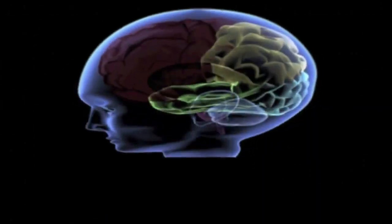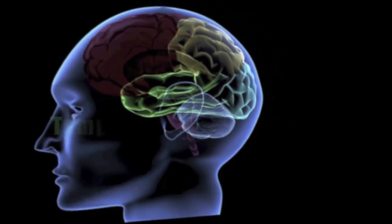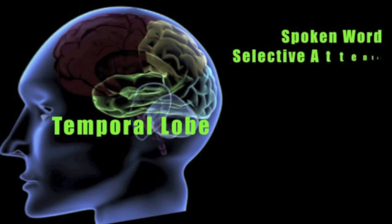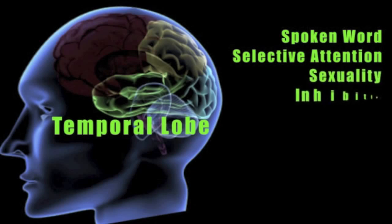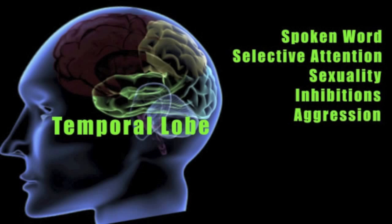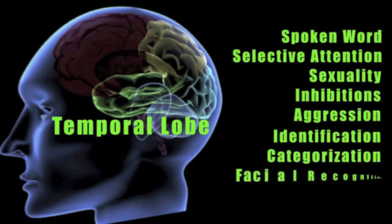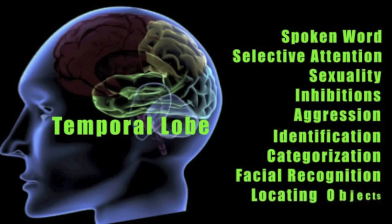The changes we see when the temporal lobe is injured is that people have problems understanding the spoken word. There are problems with selective attention and sexuality changes. A person with a temporal lobe injury may be found to persistently talk, and we often see an increase in aggressive behavior. There are also problems identifying and categorizing objects, and problems recognizing faces and finding objects.